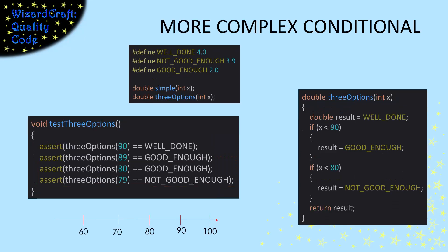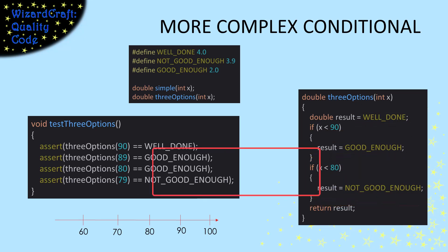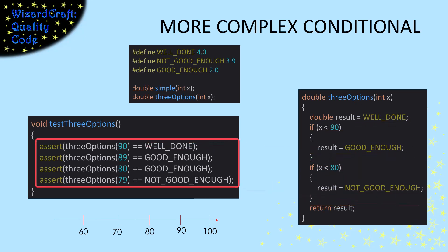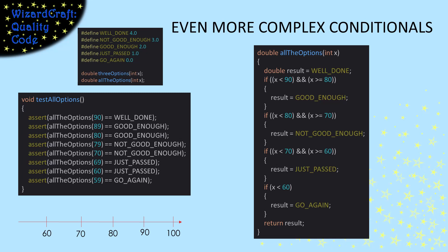If we have more conditionals, we'll have more border cases. With the three options function, there are three possible return values and the borders are 89 to 90 and 79 to 80. Two borders means that we need four asserts — two for the first border and two for the second border. This goes on and on as our code gets more complicated.